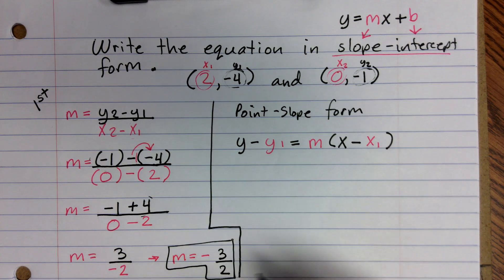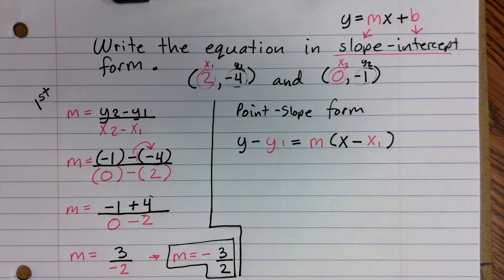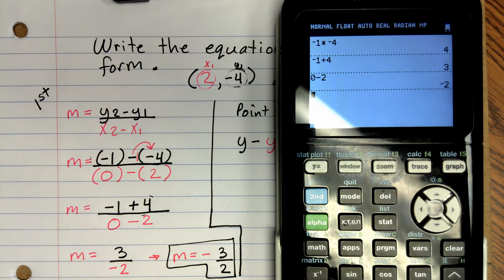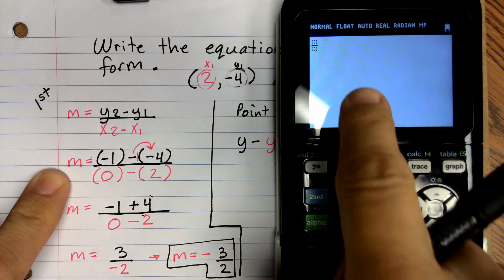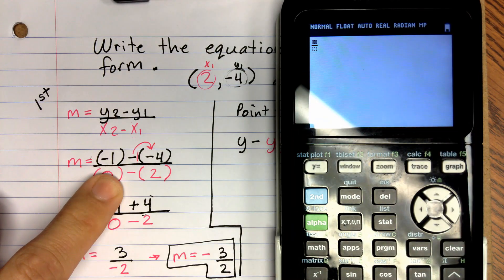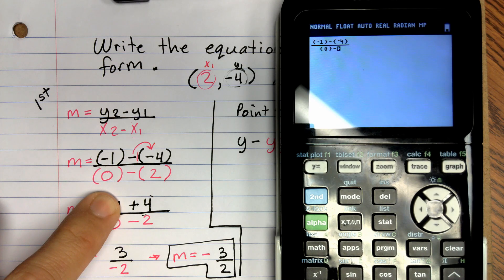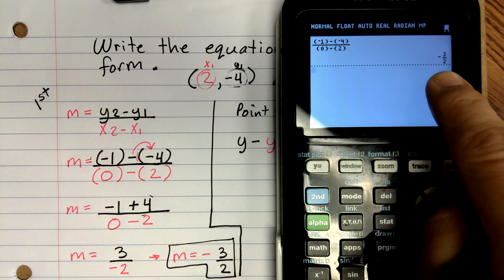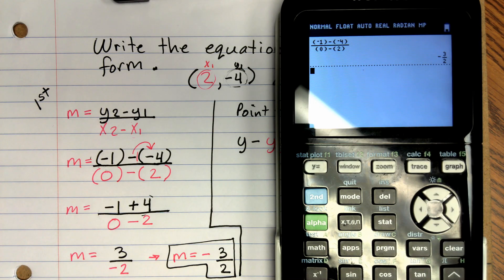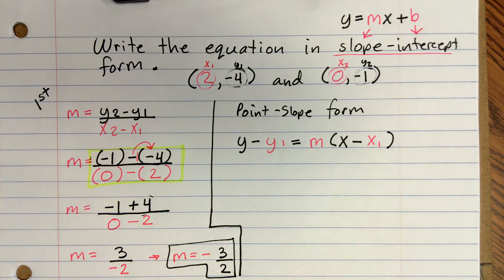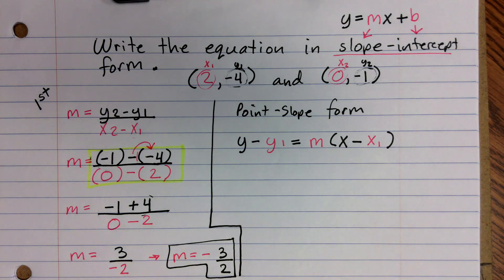That was important — it was our first step, because without the slope we can't use the point-slope formula. Now I have m equals negative 3 over 2. If you didn't want to do it by hand, you could use the calculator: hit alpha, y equals, enter to get a fraction bar, then type parenthesis negative 1, close, minus, parenthesis negative 4, close in the numerator, and parenthesis 0, close, minus, parenthesis 2, close in the denominator, and hit enter. It still gives negative 3 over 2 — same answer.